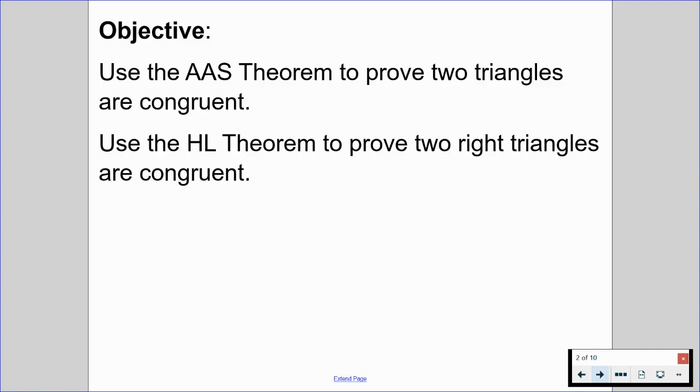By the end of this video, we should be able to use AAS theorem to prove two triangles are congruent, and we should be able to use HL theorem to prove right triangles are congruent. HL is going to be a special congruency theorem that allows us to say that triangles are congruent because it specifically involves right triangles. All the other four are just general triangles. This is the one that's specific to right triangles.